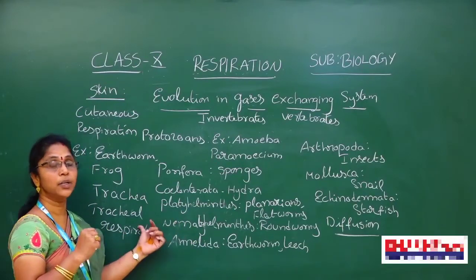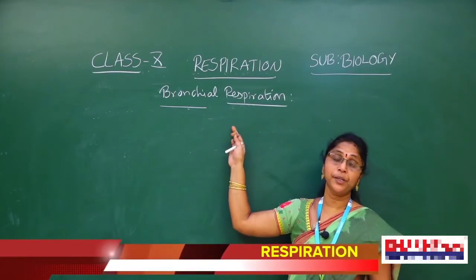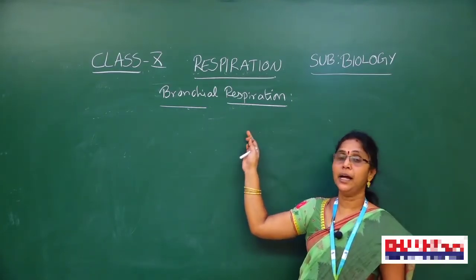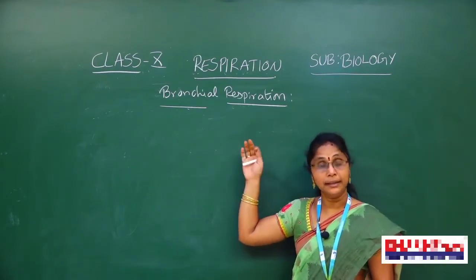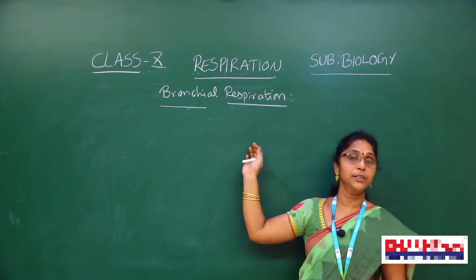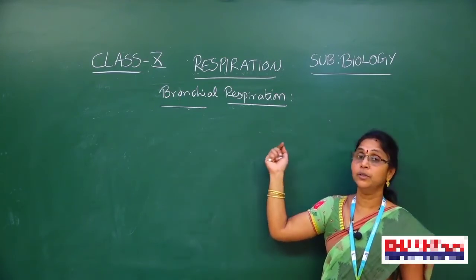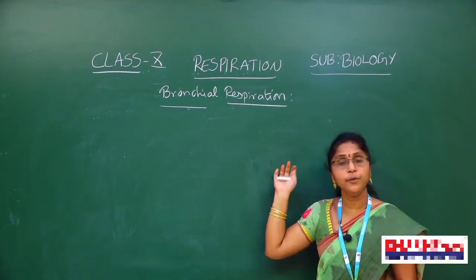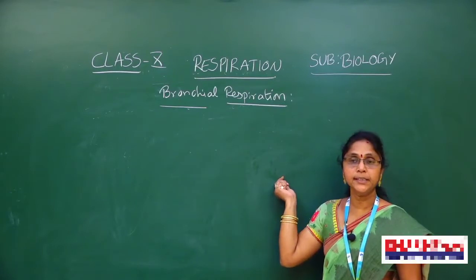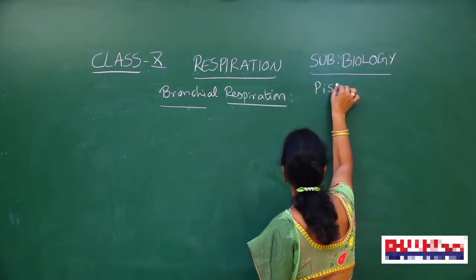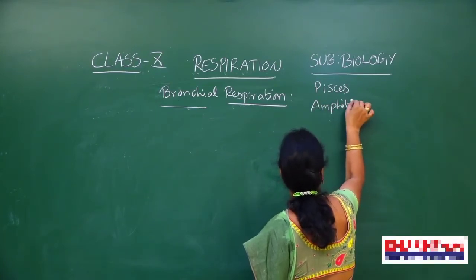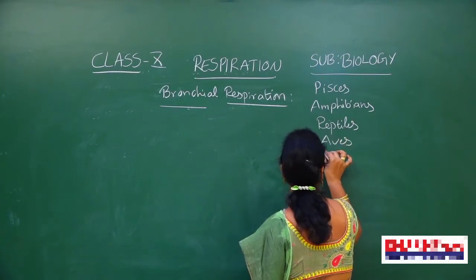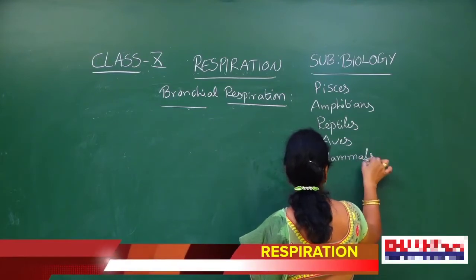After discussing respiration in invertebrates: from amoeba to roundworms, respiration occurs through diffusion; in earthworms through skin - cutaneous respiration; in insects like cockroach and grasshopper through tube-like structures called trachea divided into tracheoles - tracheal respiration. Now in vertebrates - animals with a vertebral column - there are: Pisces (fishes), amphibians (frogs), reptiles (crocodiles, snakes), aves (birds), and mammals. These are all vertebrates.